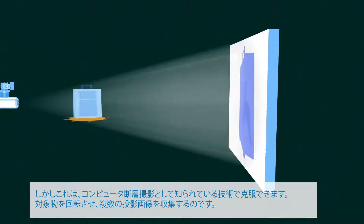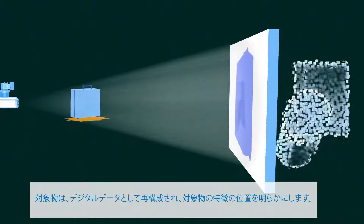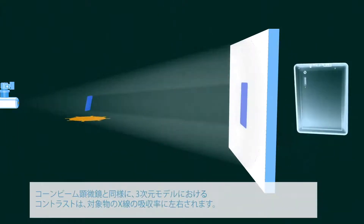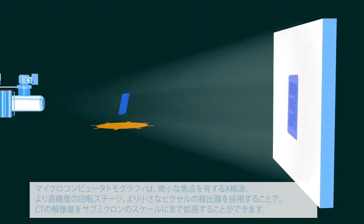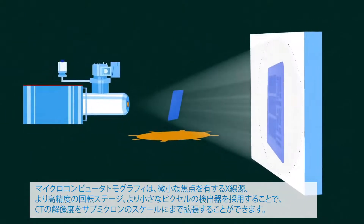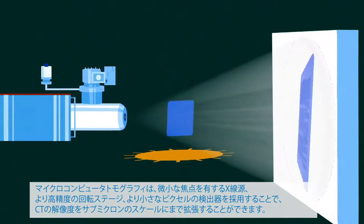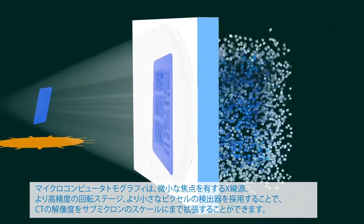Several projection images are collected as the object is rotated. The object is digitally reconstructed, revealing the position of features within it. As with cone-beam microscopy, contrast in the three-dimensional model comes from the absorption difference of the features in the object. Microcomputed tomography extends the resolution of CT into the submicron scale by using X-ray sources with finer focuses, object stages with higher precision, and detectors with smaller pixels.